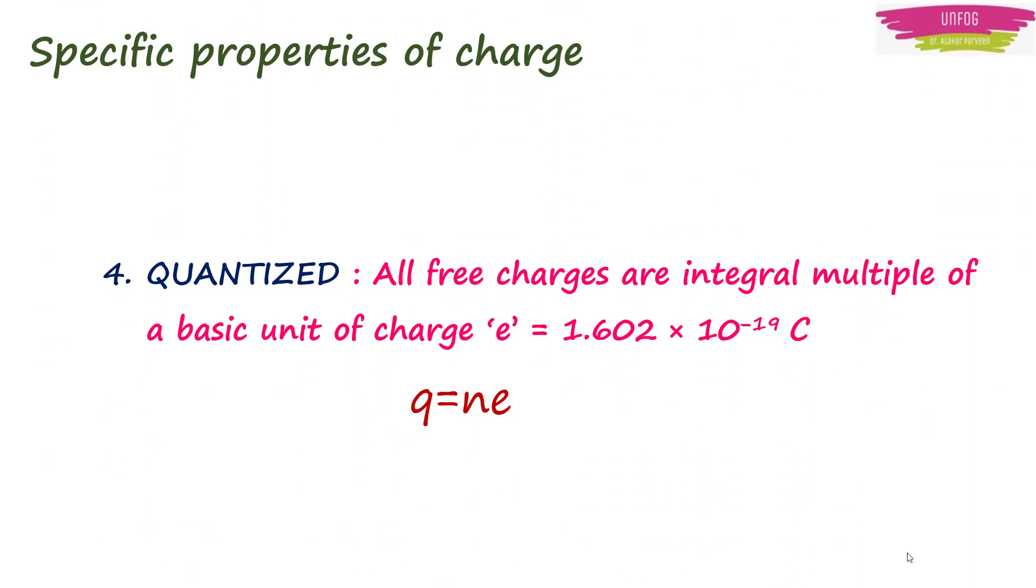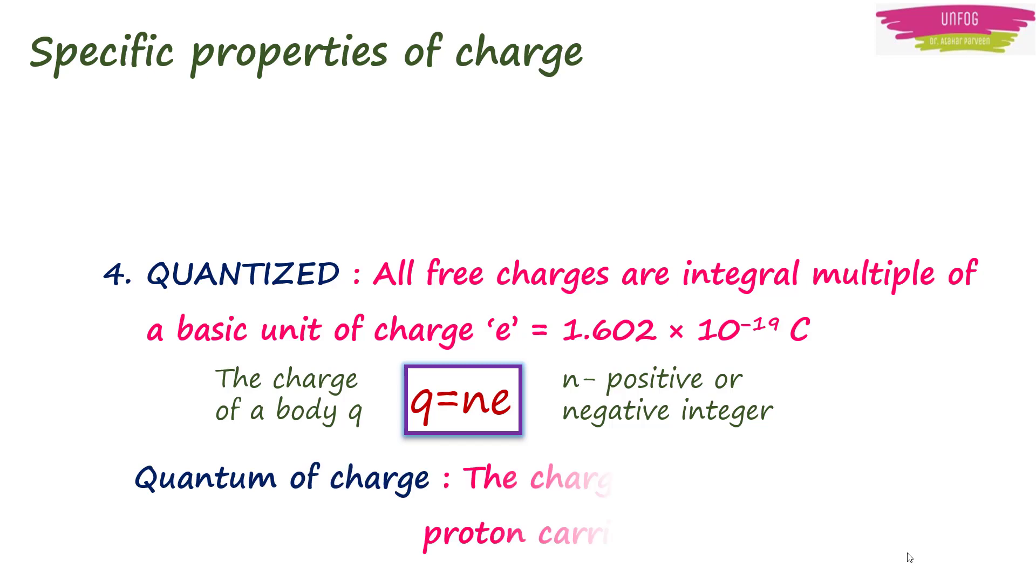Charge is quantized means all free charges are integral multiples of a basic or elementary unit of charge e, which is equal to 1.6 × 10^-19 coulomb. The charge of a body q is equal to ne, where n is a positive or negative integer, and the charge that an electron or proton carries is called the quantum of charge.